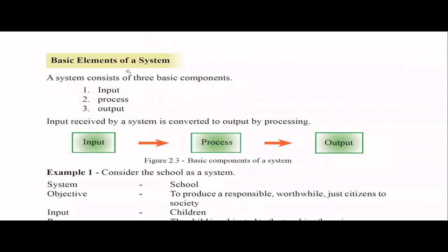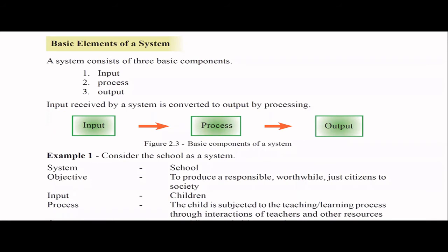In a system, there are basically three components — you learned these in grade 10 as well. In a computer, you can see these components: input, process, and output. Input feeds things to the system, then processing happens, and then you get the output. That's how a normal system works with these components.